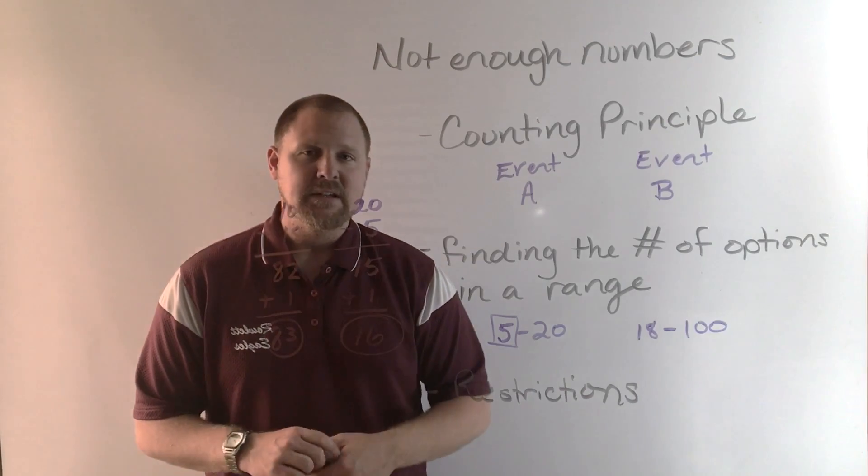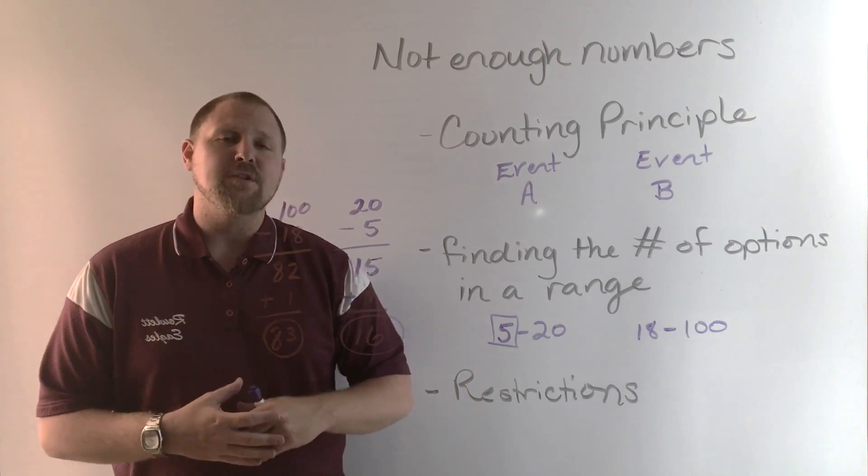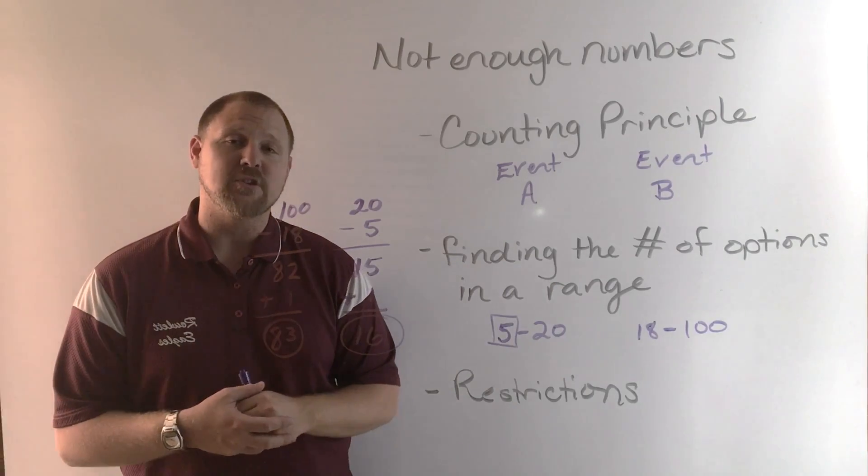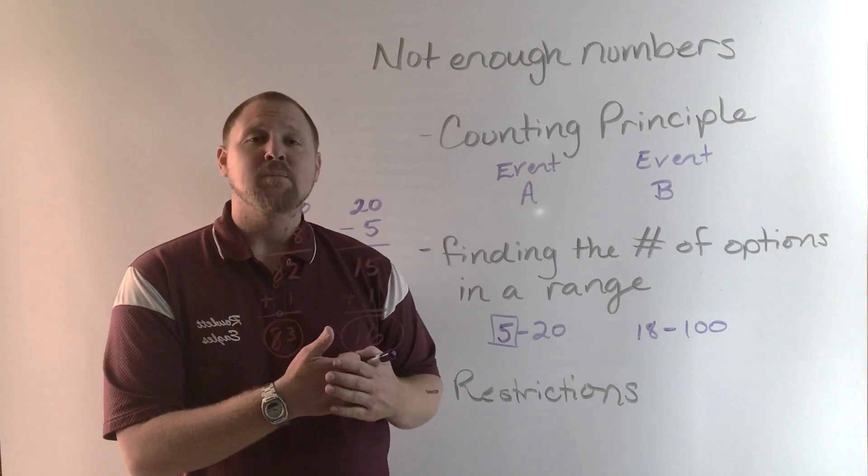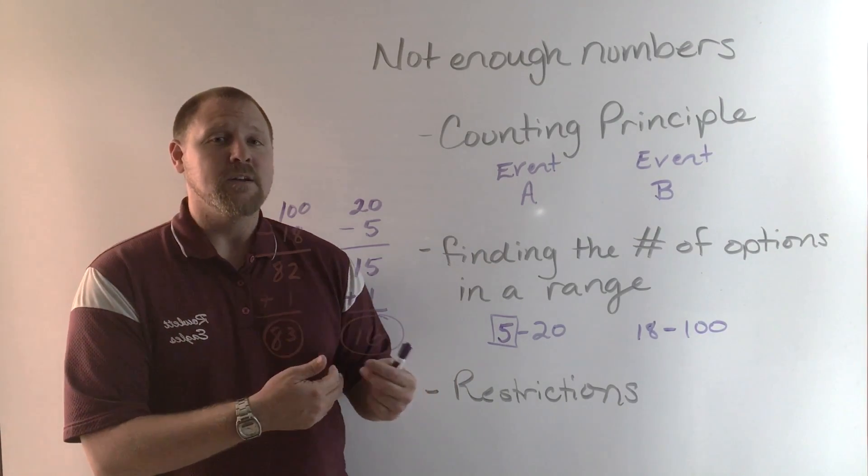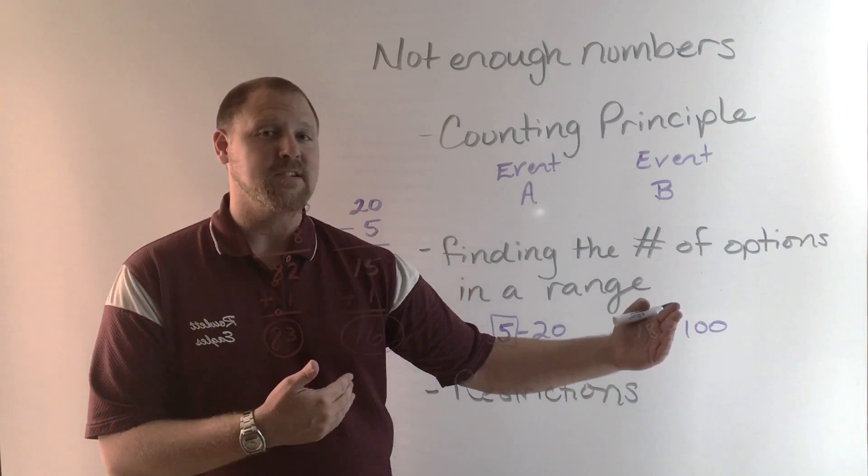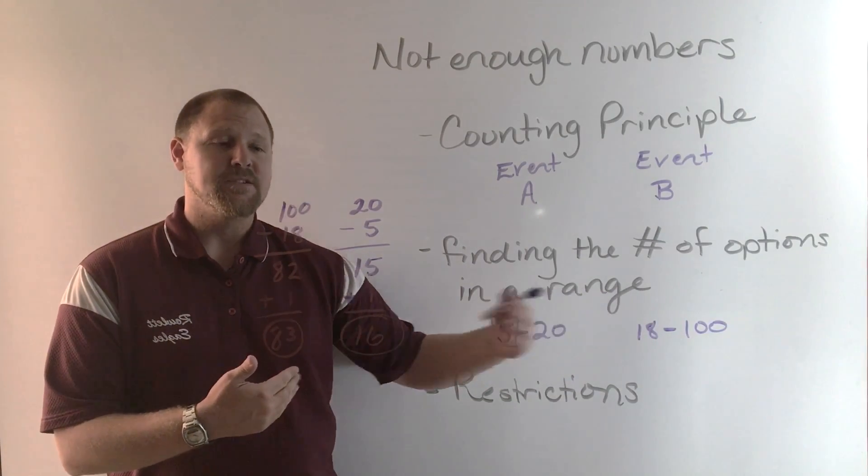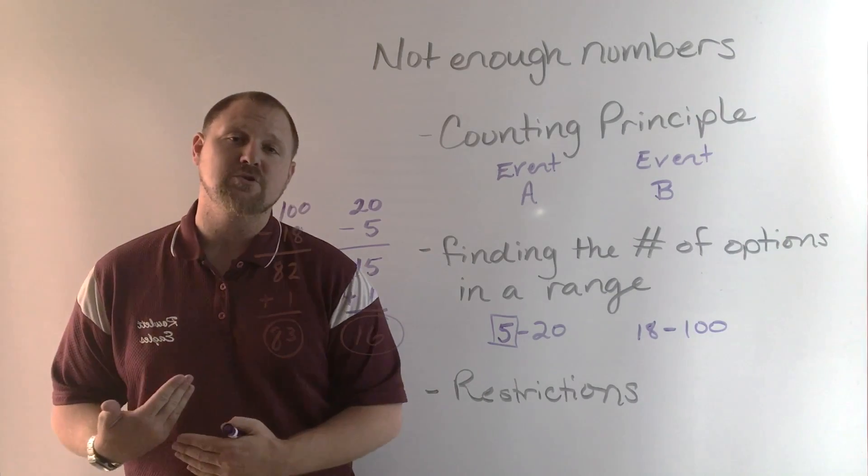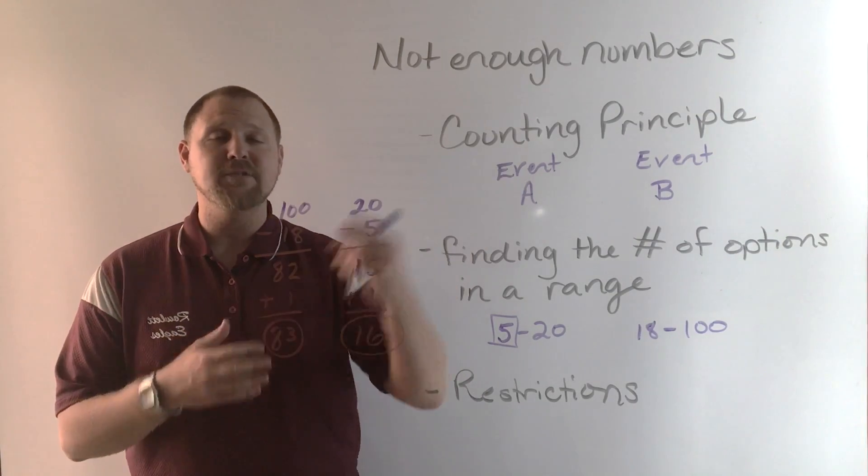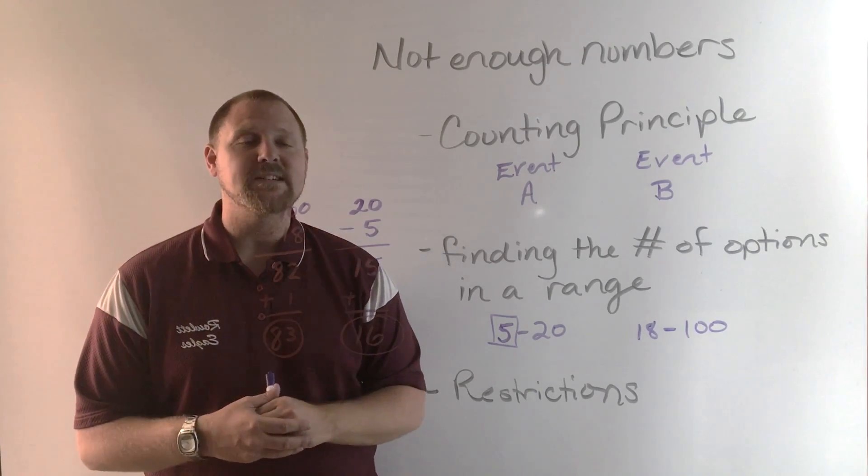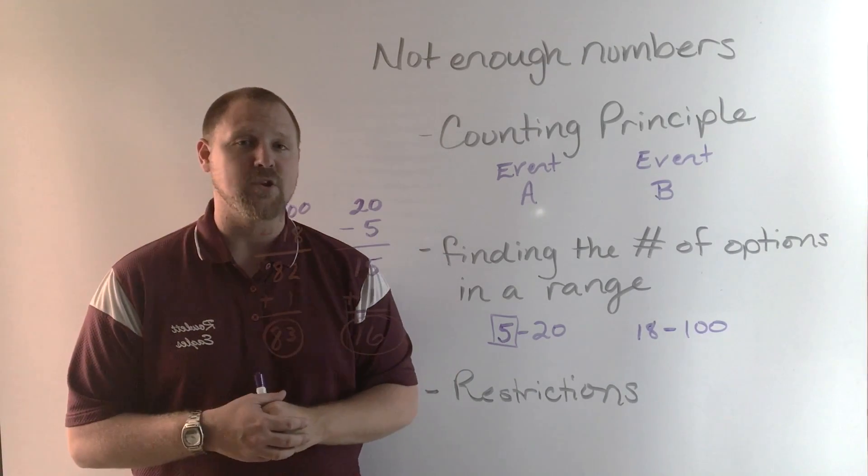And then restrictions. Every range of numbers or every telephone number, every system of numbers has certain restrictions. The telephone number restriction helps to prevent dialing 9-1-1 before you start dialing the rest of the 10-digit number. There are restrictions you have to take into consideration, and then you have to remove those restrictions from your counting principle estimation in order to get a relatively accurate estimation.